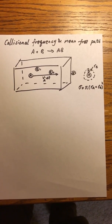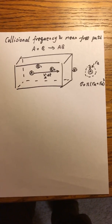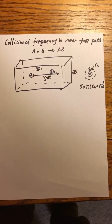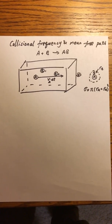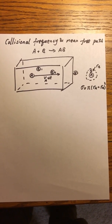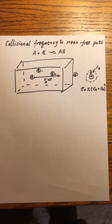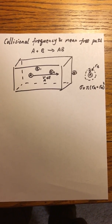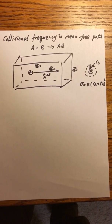In this video, I will derive the collision frequency and mean free path. Collision frequency is very important in chemistry. This is because if A and B react to produce products, they have to collide first. And the reaction rate is thus proportional to the collision frequency between A and B.